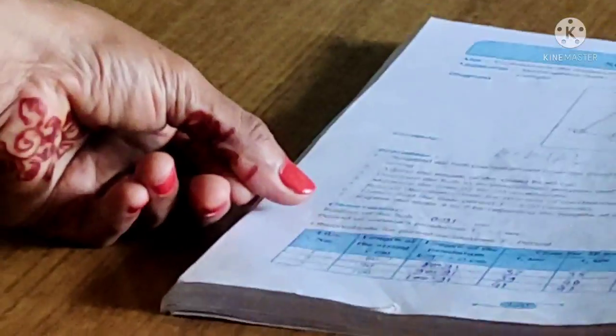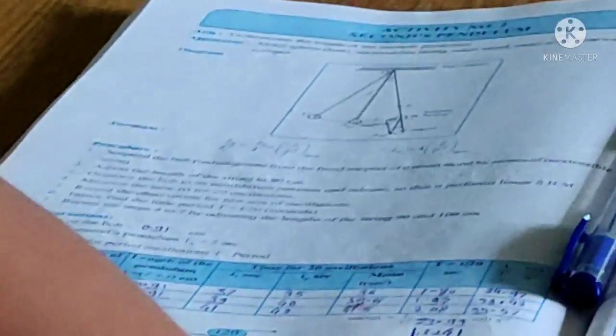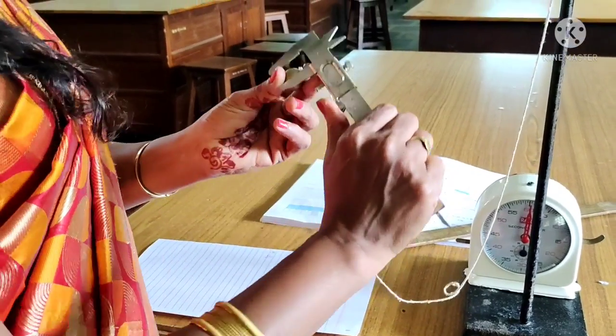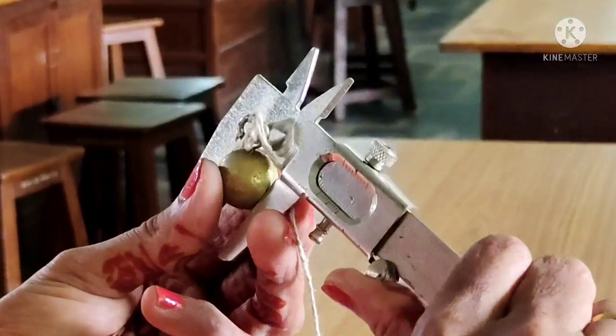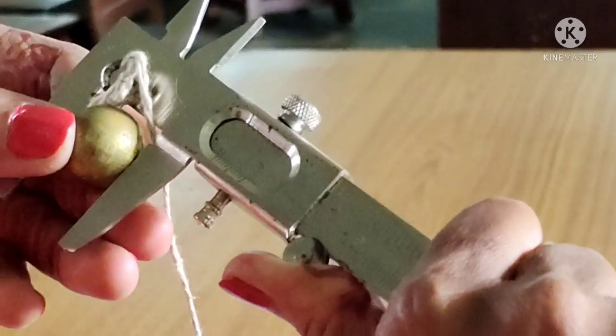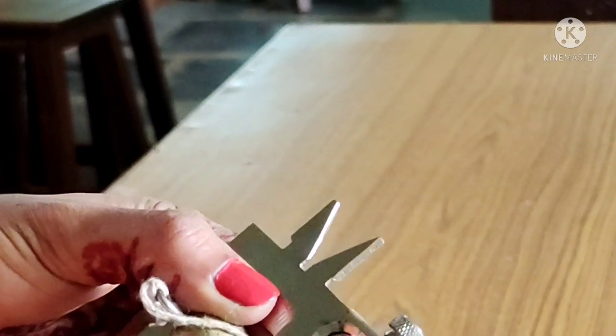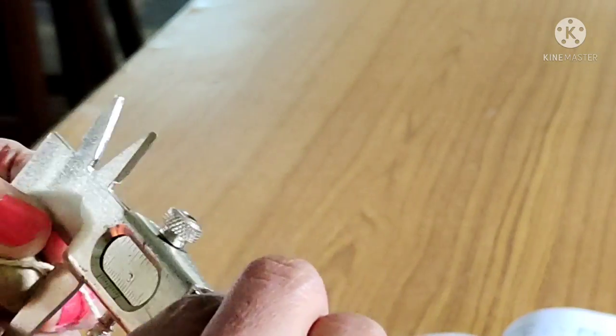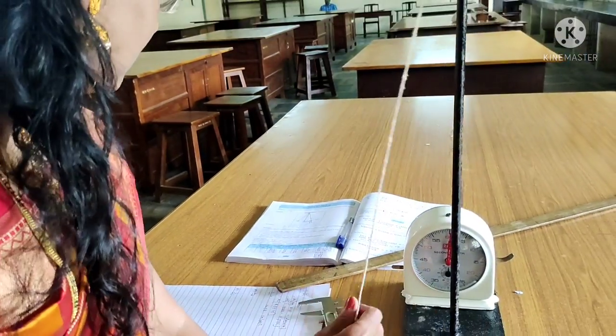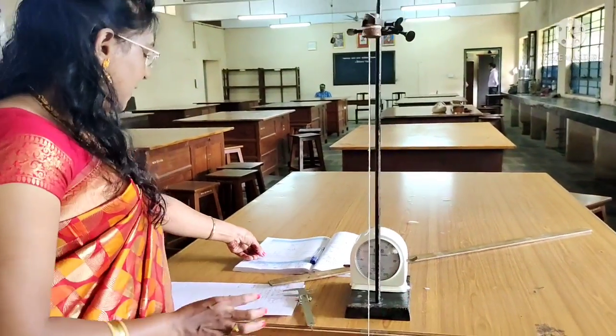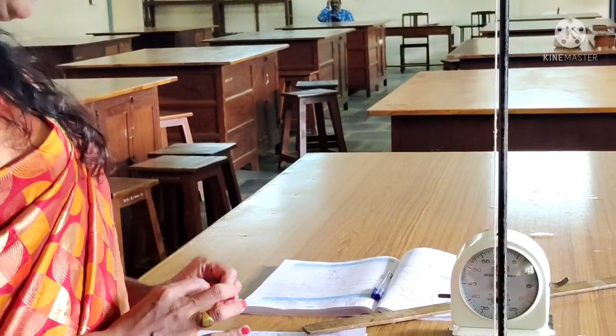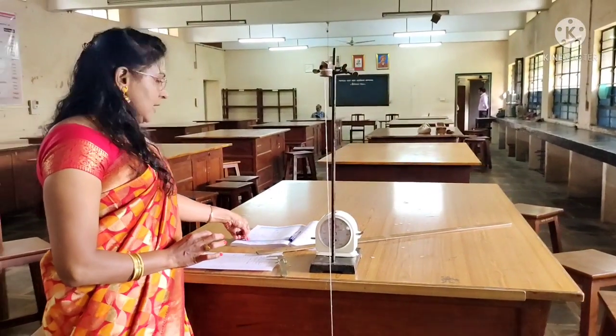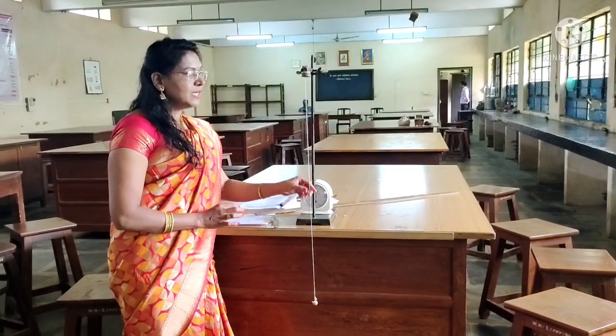In observation, first observation is radius of bob. So this is the spherical ball, and we measure the main scale and coinciding division of the vernier scale.